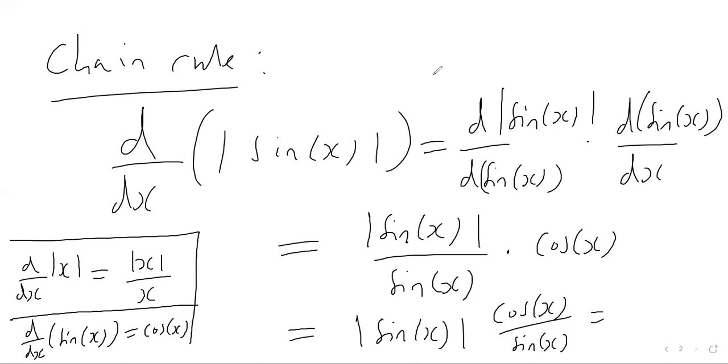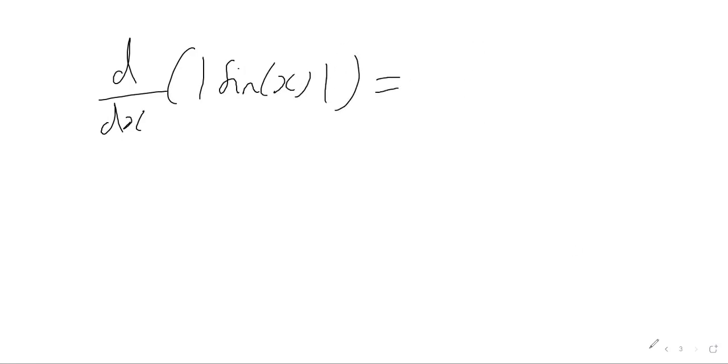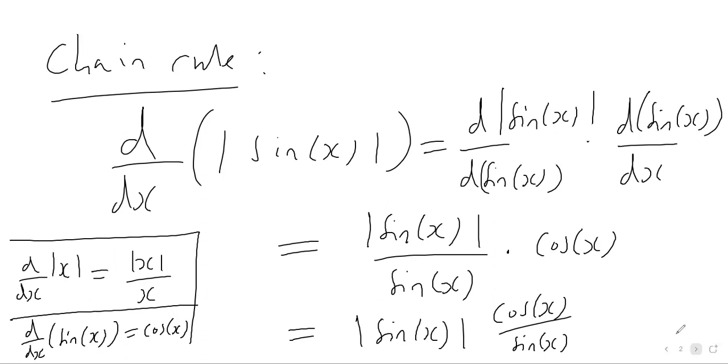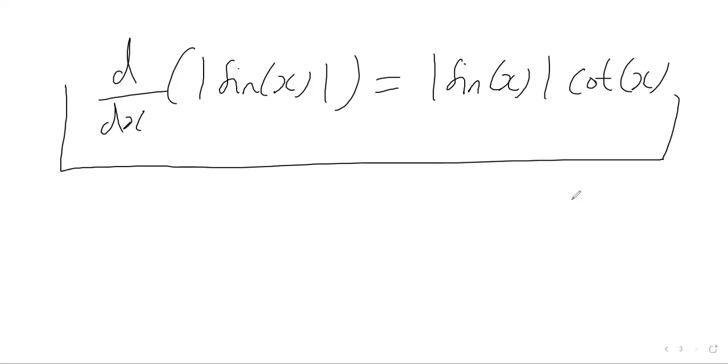But this is actually just the same. This cos x over sine x is just the same as the cotangent function. So what we can say in conclusion is that when we differentiate the modulus of sine x, we get the modulus of sine x multiplied by cot x. And that's our final result for this video.